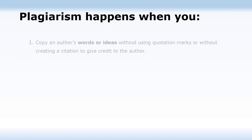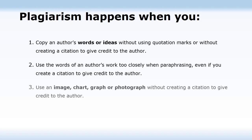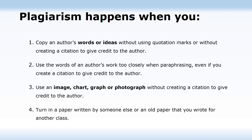Plagiarism happens when you copy an author's words or ideas without using quotation marks or without creating a citation to give credit to the author. It also happens when you use the words of an author's work too closely when paraphrasing, even if you create a citation. Additionally, using an image, chart, graph, or photograph without creating a citation, or turning in a paper written by someone else or an old paper you wrote for another class, are all forms of plagiarism.